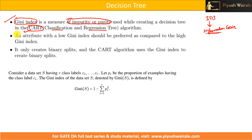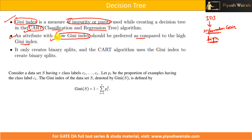How do we decide which attribute to select? We find the Gini Index for all attributes, and the attribute with the low Gini Index should be preferred over one with a high Gini Index. In the ID3 method, the attribute with high information gain is preferred as the root node. So remember: for ID3, information gain should be high; for the Gini Index in CART, it should be low.